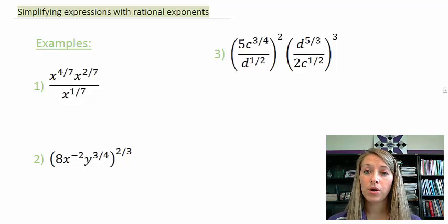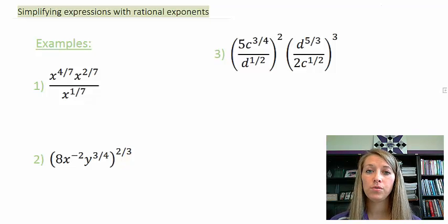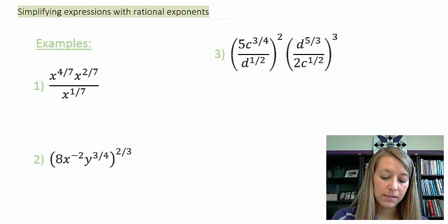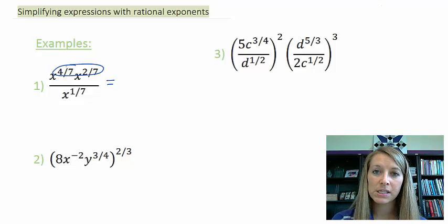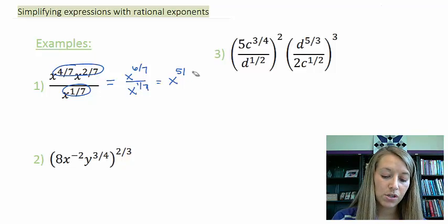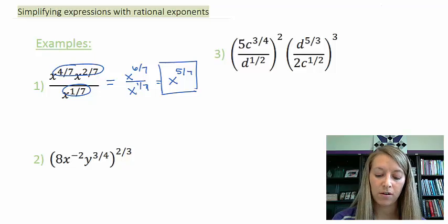A few more examples simplifying using exponent properties. Example one: add the exponents in the numerator and subtract the exponent in the denominator. This becomes x to the 6 sevenths over x to the 1 seventh. Subtracting gives x to the 5 sevenths. Since the instructions don't say to convert back to radical notation, that's the final answer.